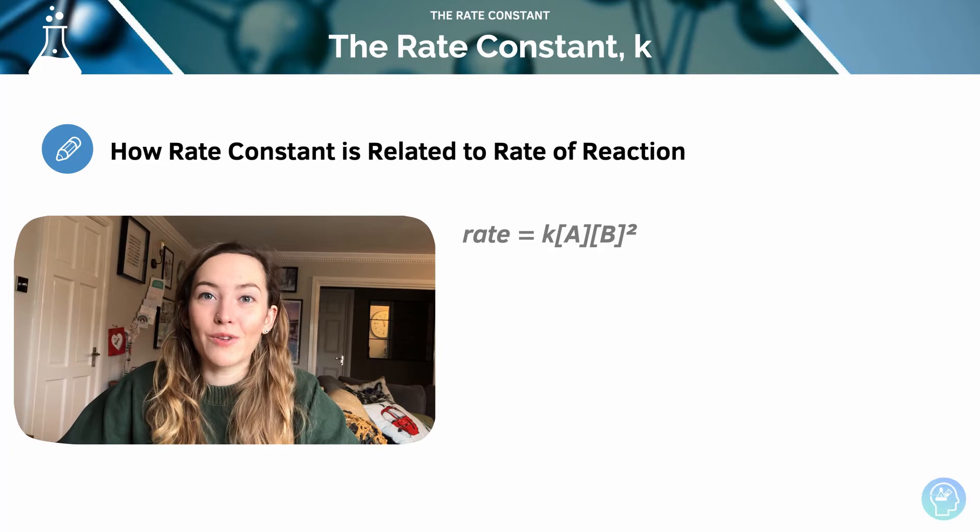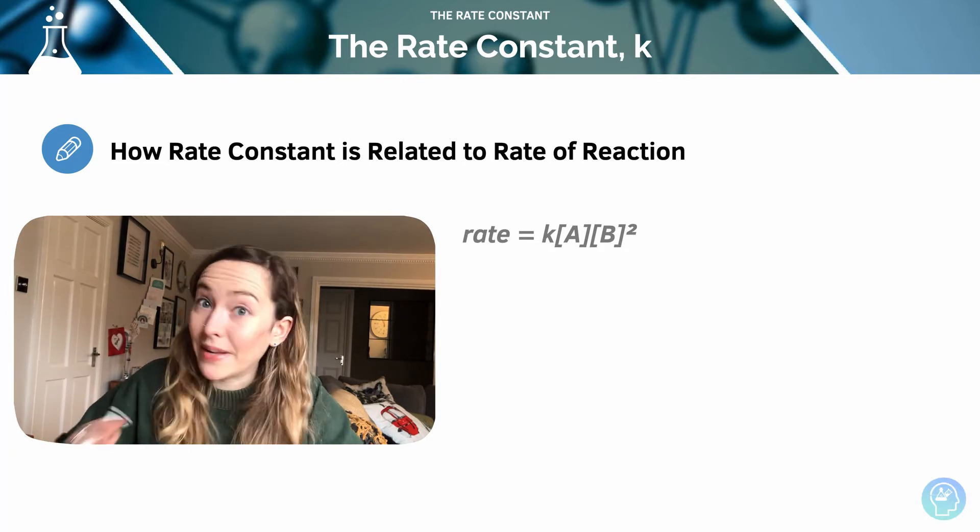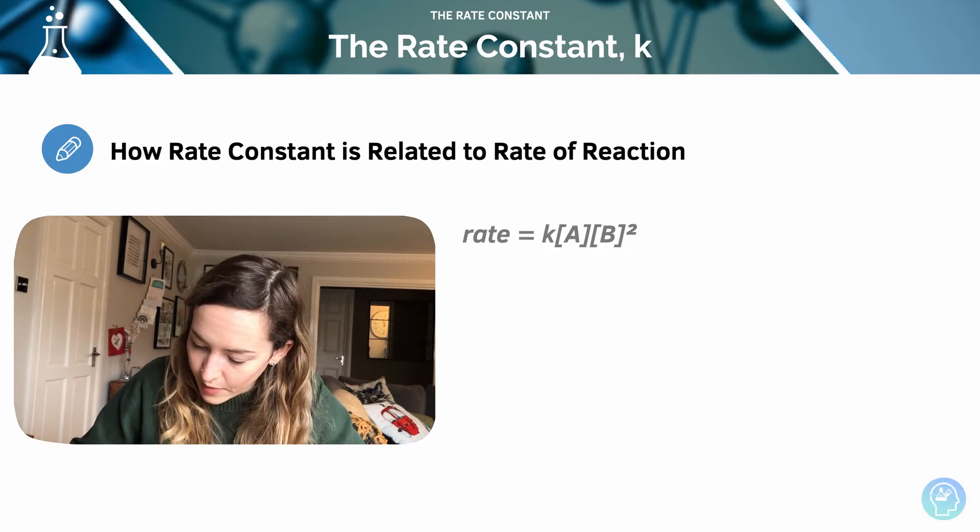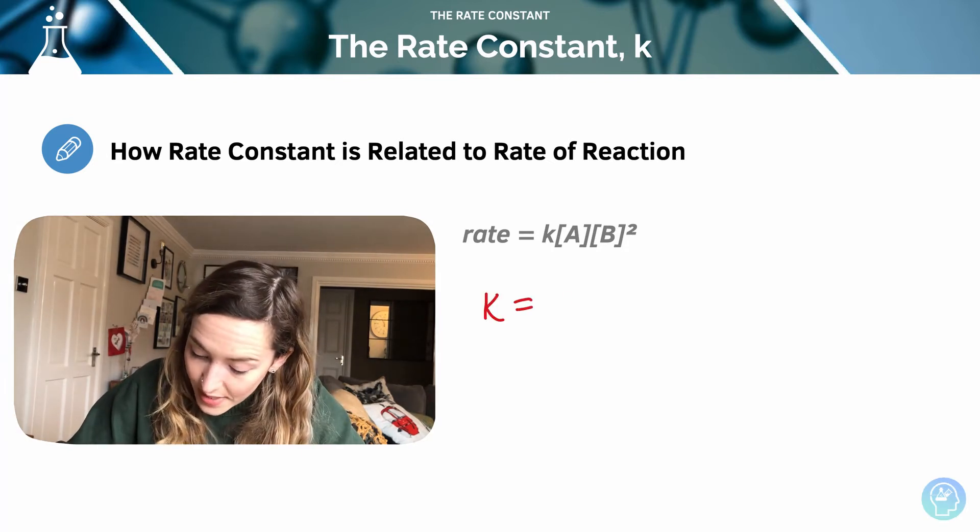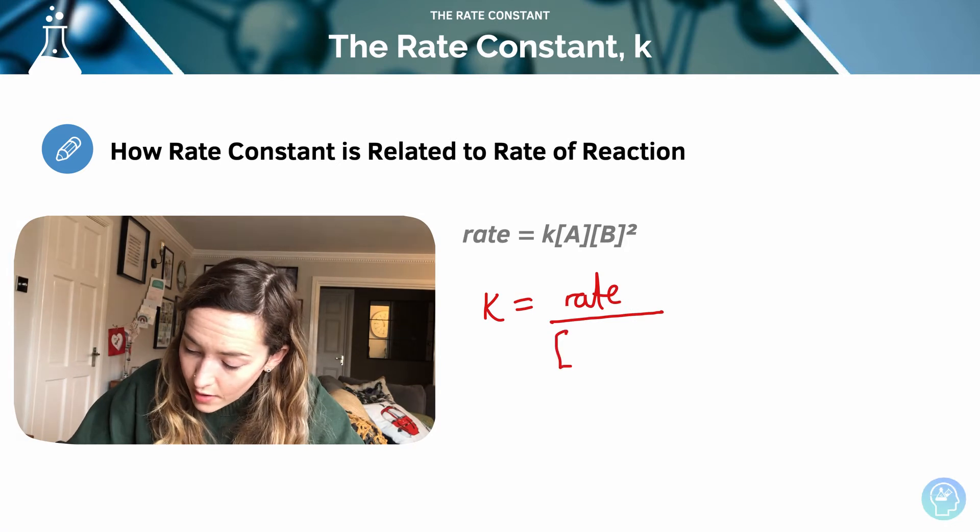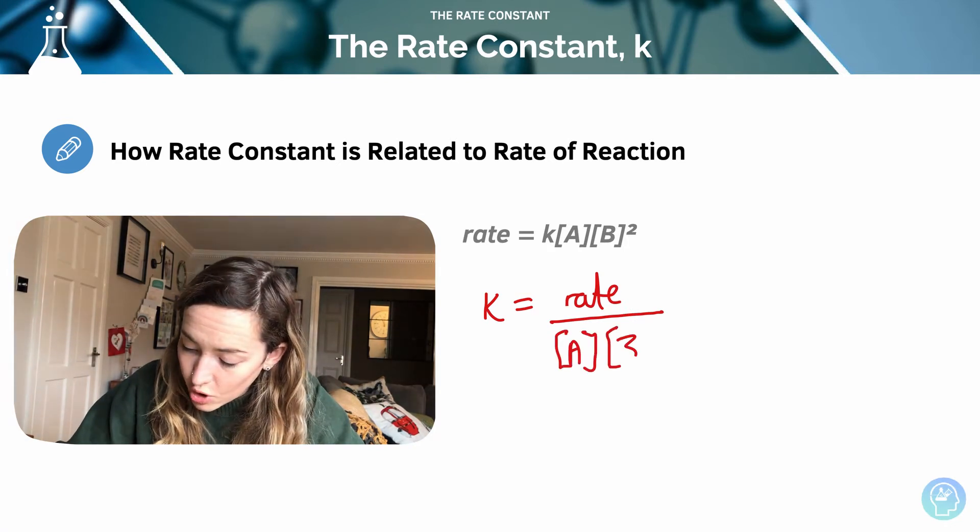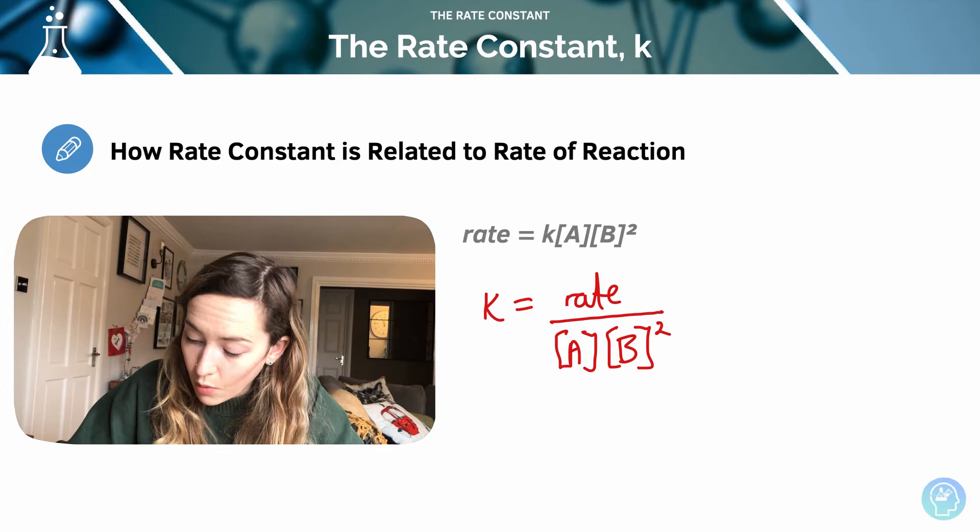We can work out k. So there's my example for a particular reaction, remember it's different for all of them, and we can rearrange this to make k our subject. So we can say that k is equal to the rate over the concentration of A times the concentration of B raised to the power of 2.